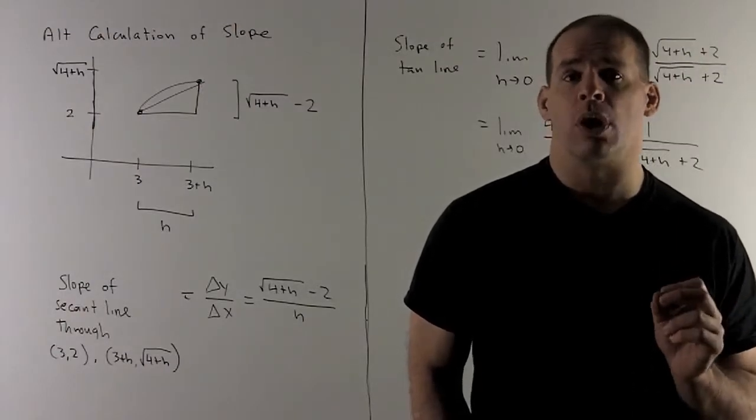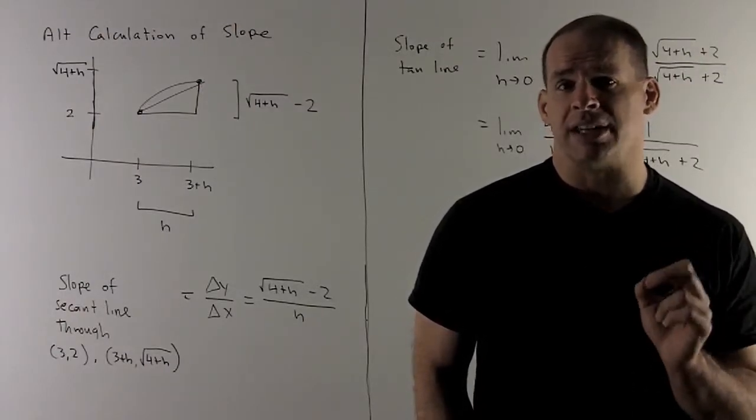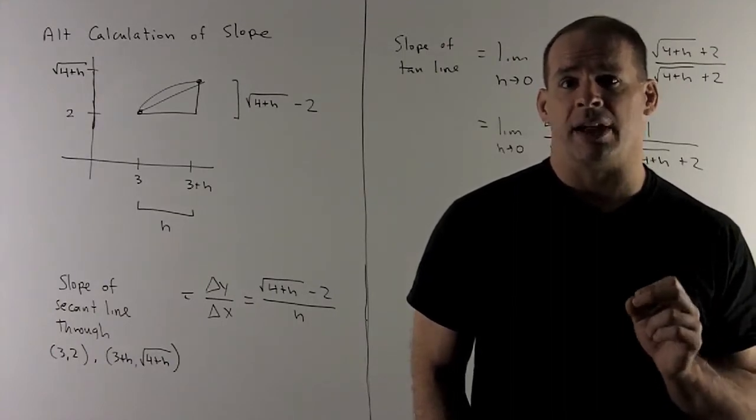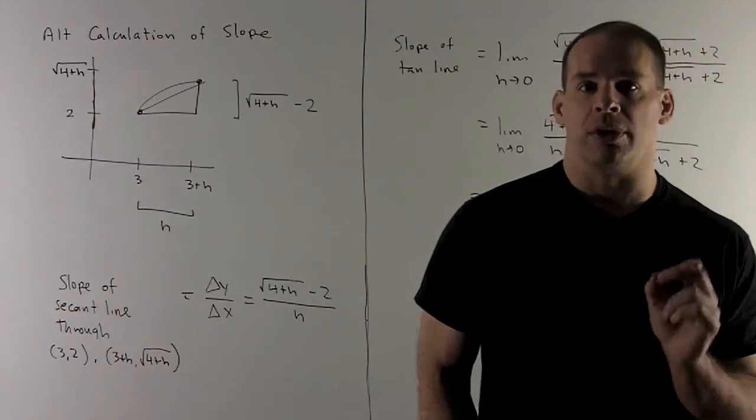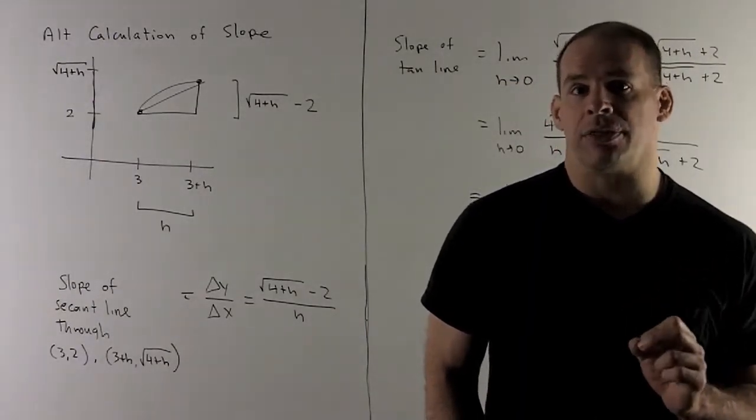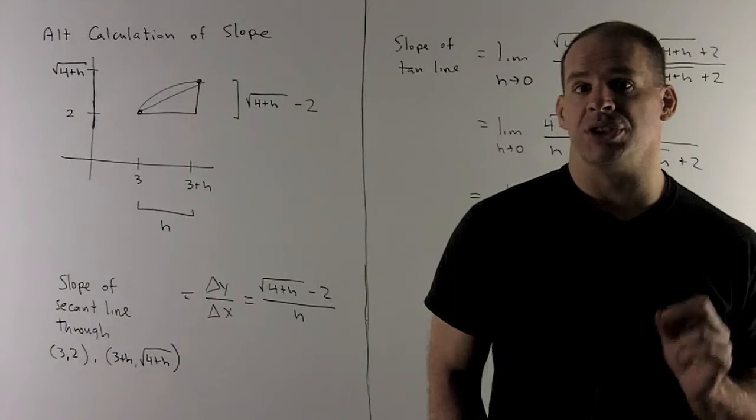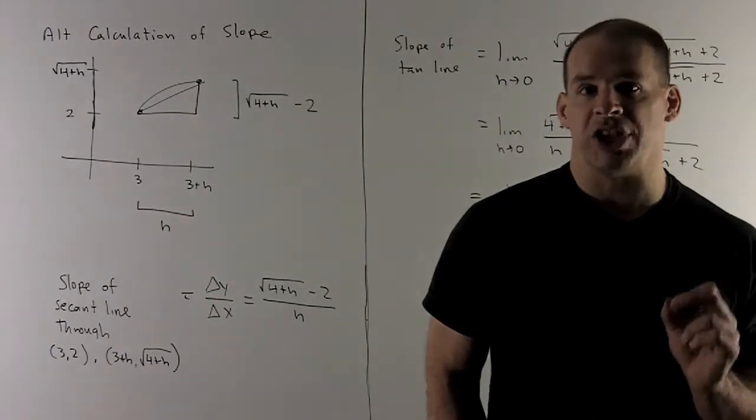As noted before, it would be better if we have a limit with h going down to 0 instead of our x going down to 3. So what I'll want is, instead of x going to 3, I'm going to want 3 + h going down to 3 as h goes to 0.